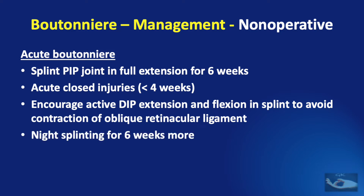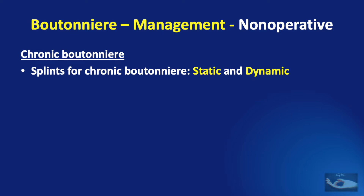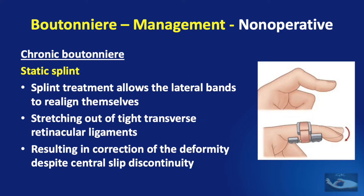This is done to avoid contraction of the oblique retinacular ligament. Night splinting should be continued for 6 weeks after this 24/7 splinting of the PIP joint. In chronic Boutonniere, the splints that can be applied are static or dynamic. The static splint allows the lateral bands to realign themselves and helps stretch out the tight transverse retinacular ligaments, resulting in correction of the deformity despite central slip insufficiency.